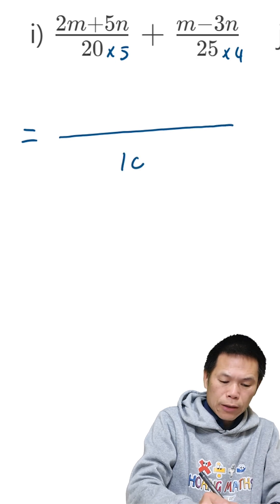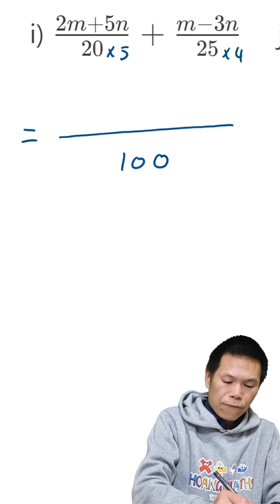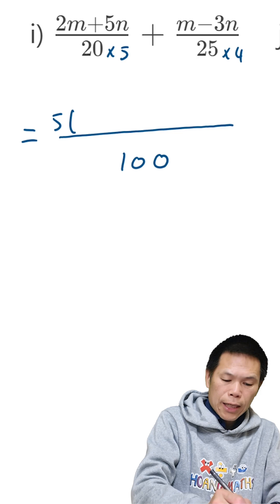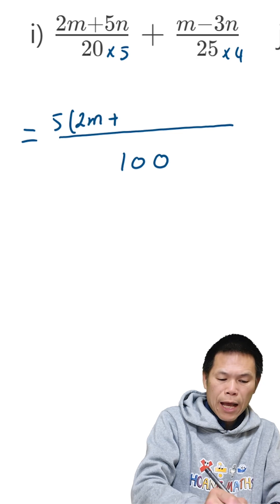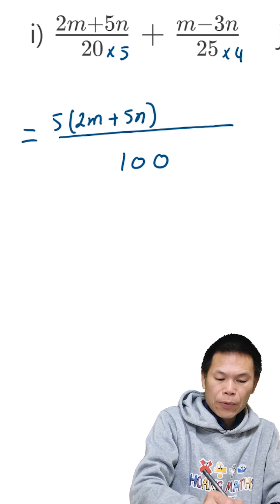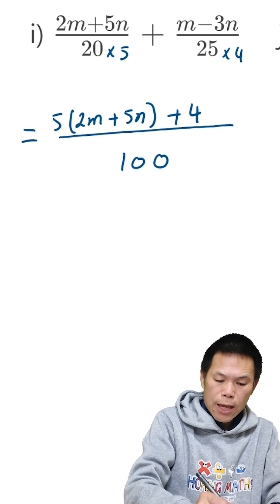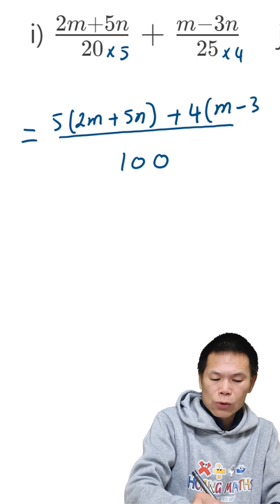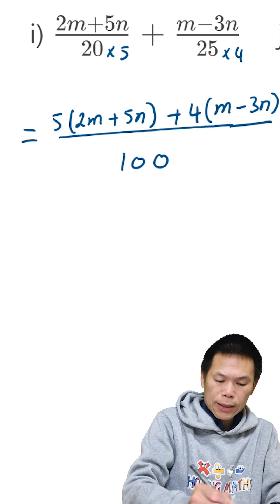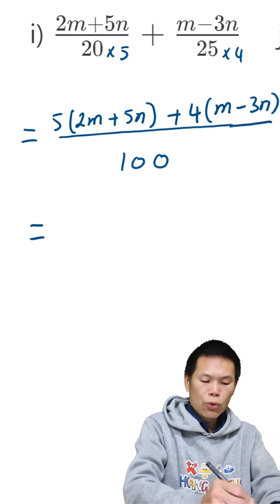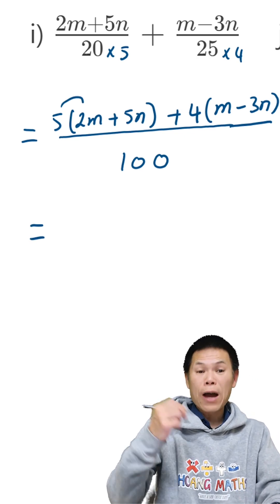Let me write 100 here. So that is 5 times (2m + 5n), and we add 4 times (m - 3n), because the top multiplies by 4 as well. So that equals 5 times 2...